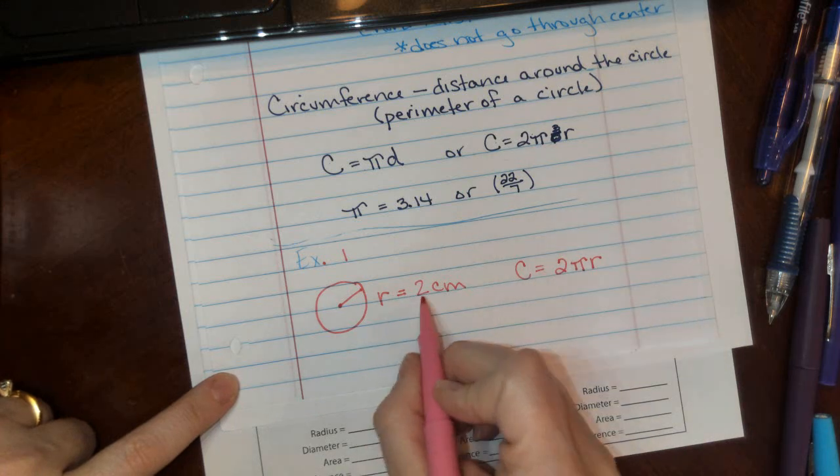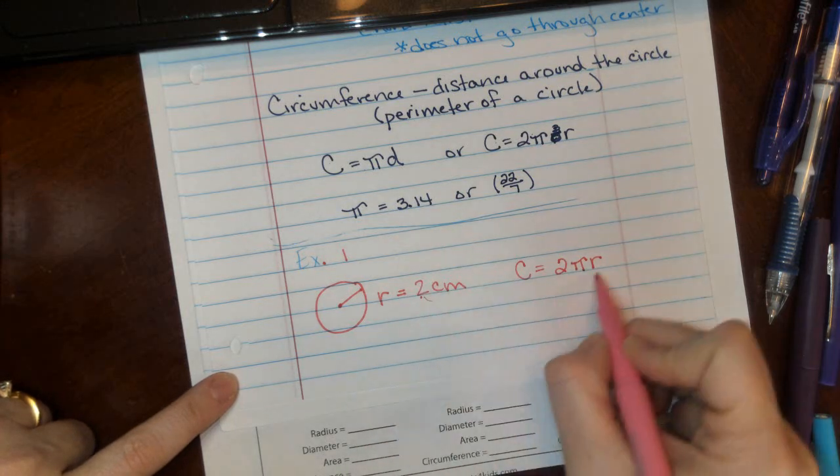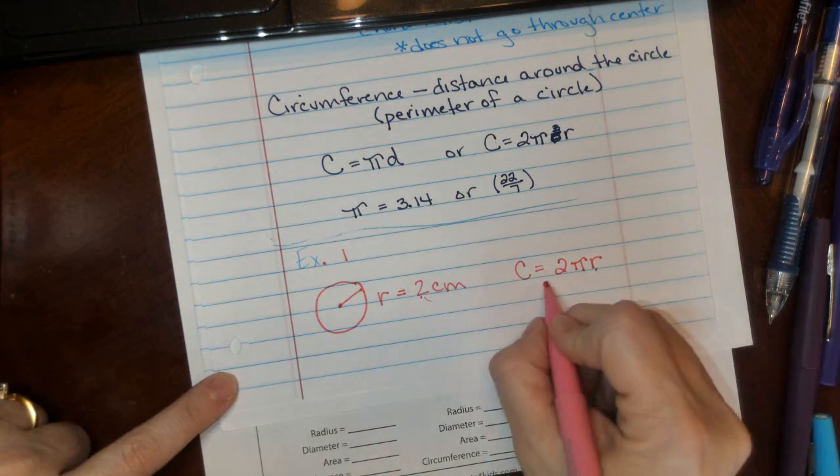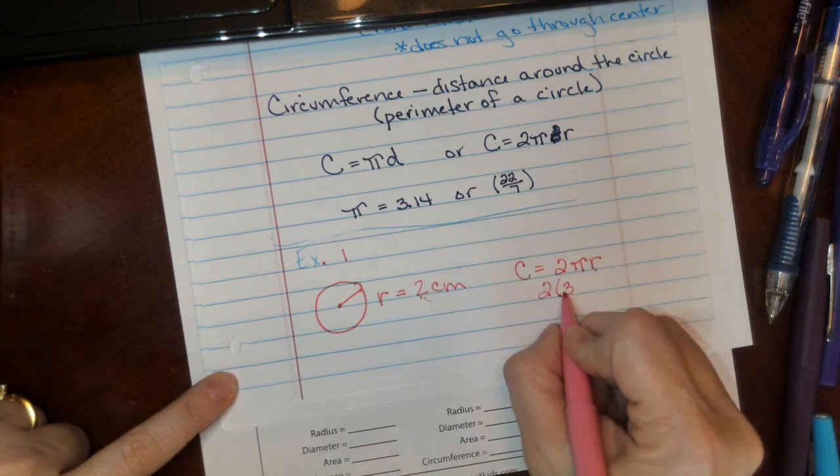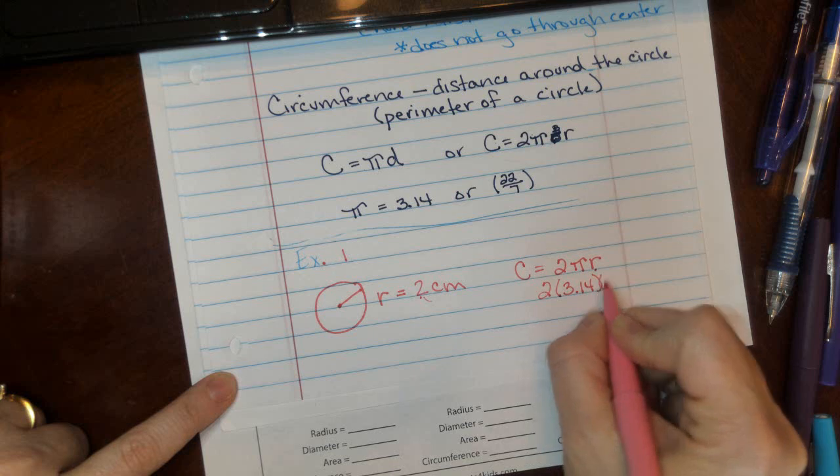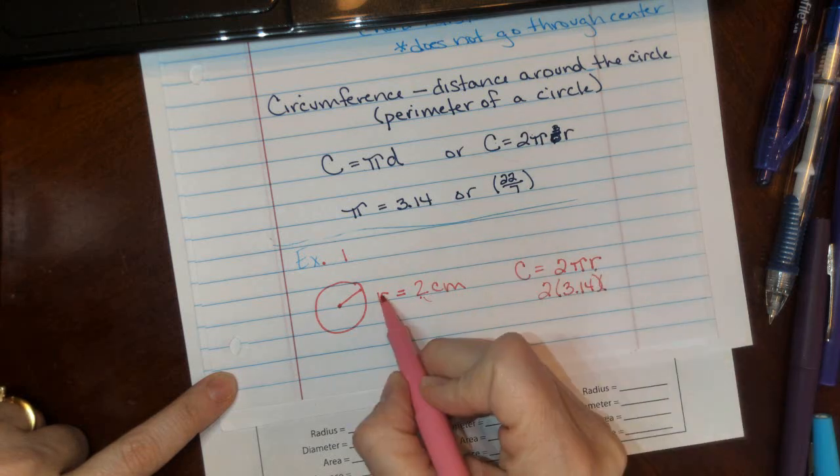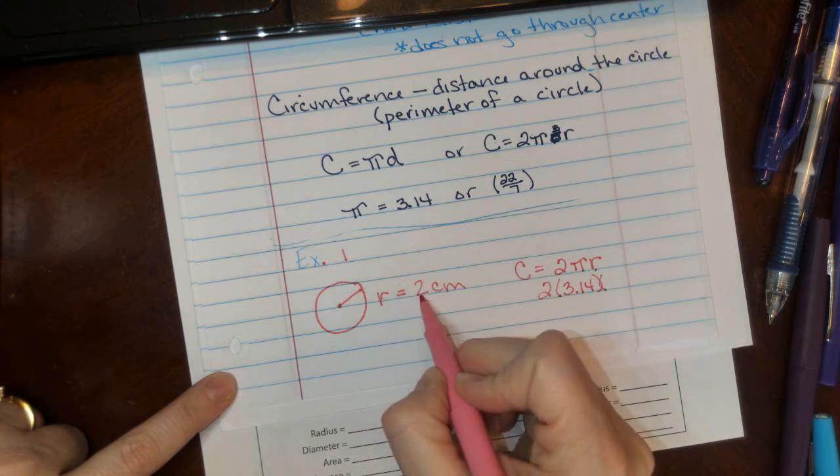All we do is substitute 2 in for r. We have 2 times pi—we'll use 3.14—times the radius. Since r stands for radius, we're going to put in 2.